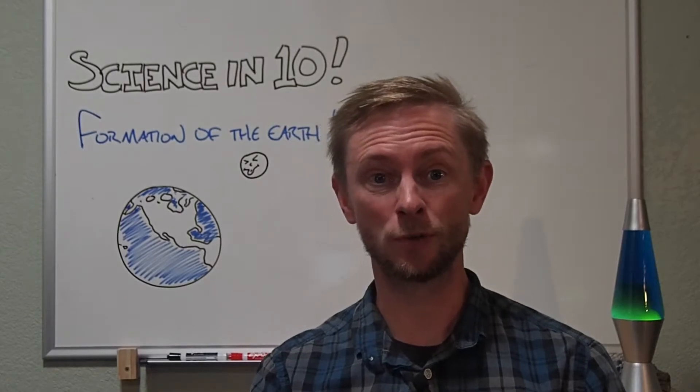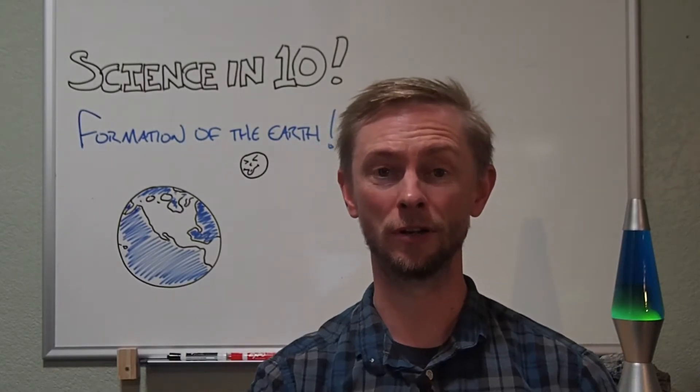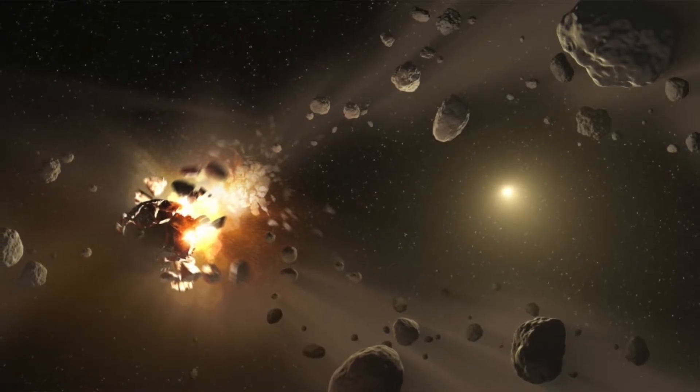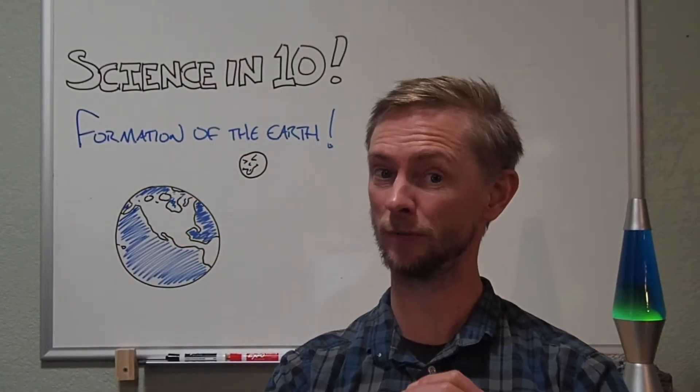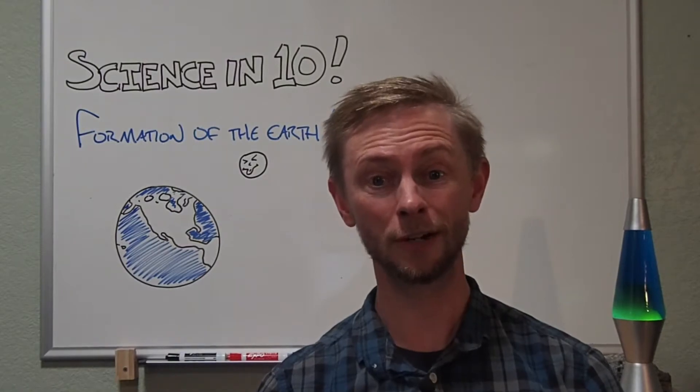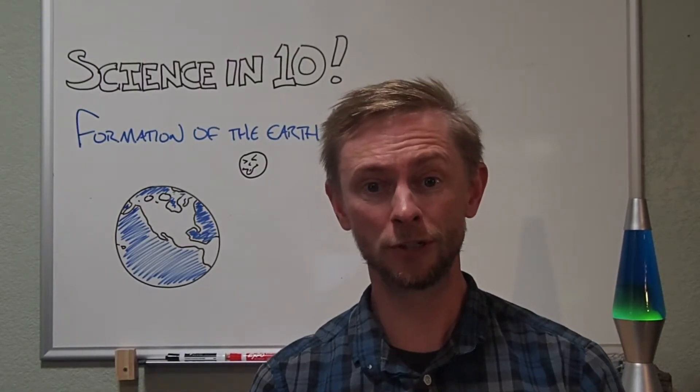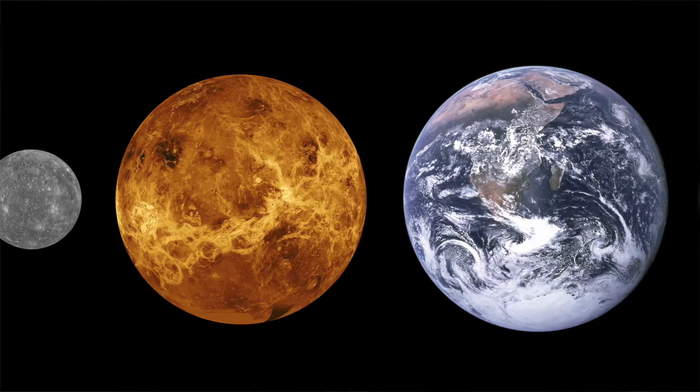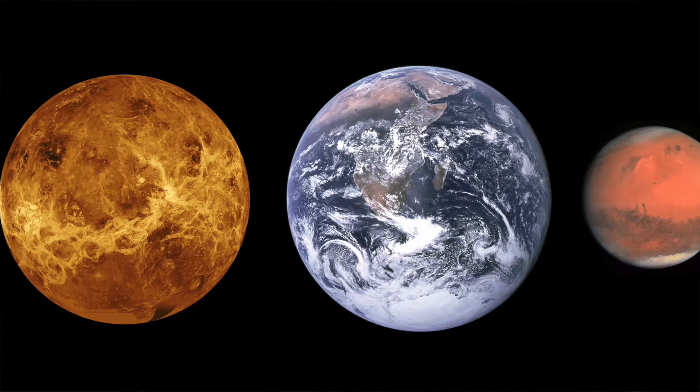These planetesimals and asteroids were constantly colliding with each other, sometimes completely obliterating each other, other times accreting together to form larger planetesimals. Within a few million years, this period of planetary accretion created our four terrestrial rocky planets. Mercury, Venus, Earth, and Mars.